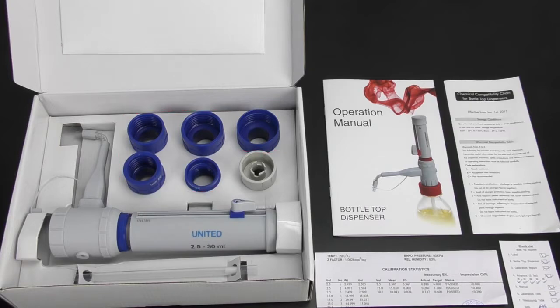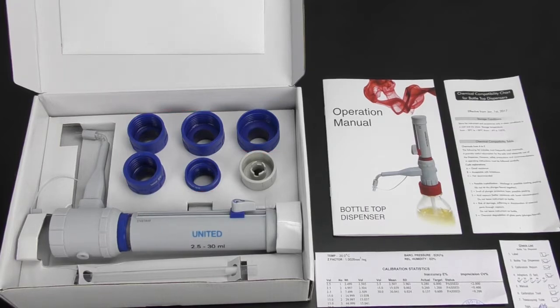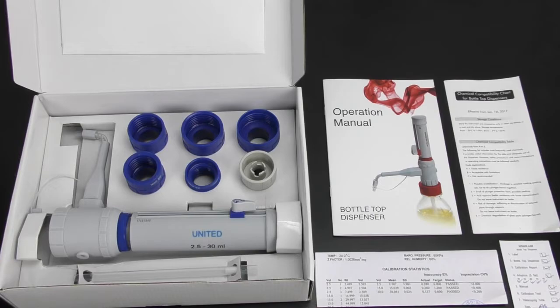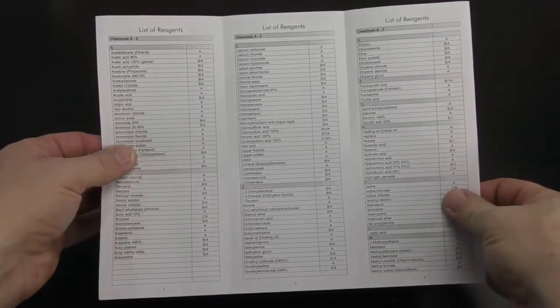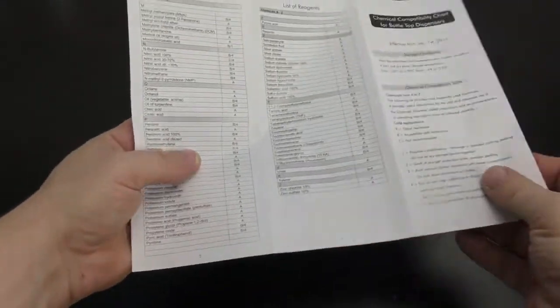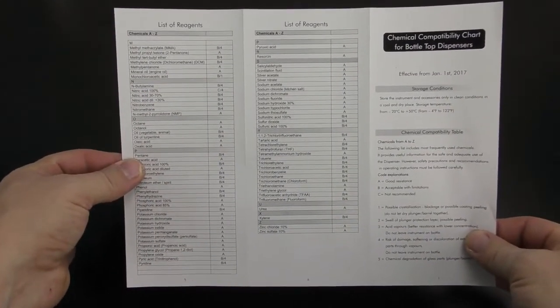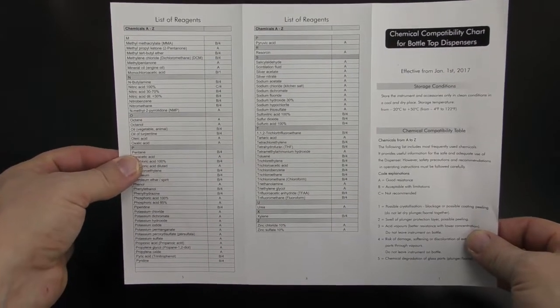All wetted products are made from PTFE and borosilicate glass for maximum chemical resistance. It includes a chemical compatibility chart so you have a better idea of what chemicals you are allowed to put in and which ones are not recommended.